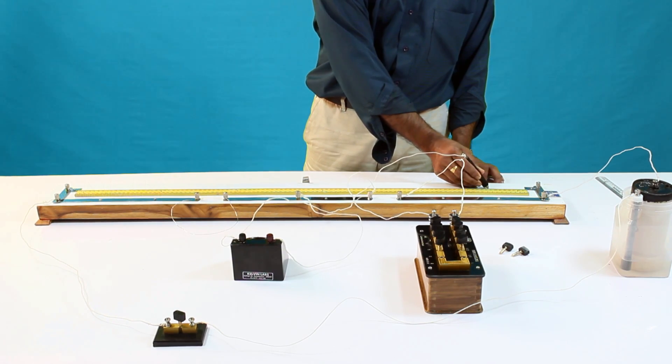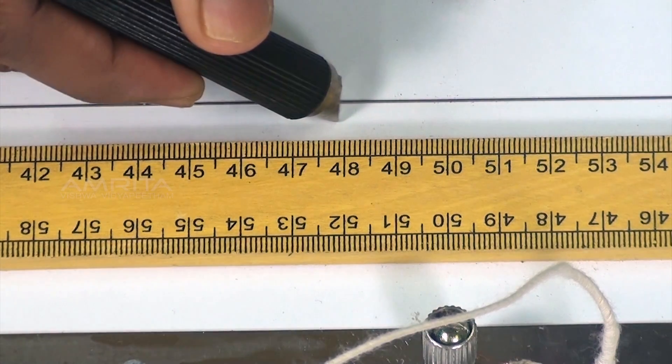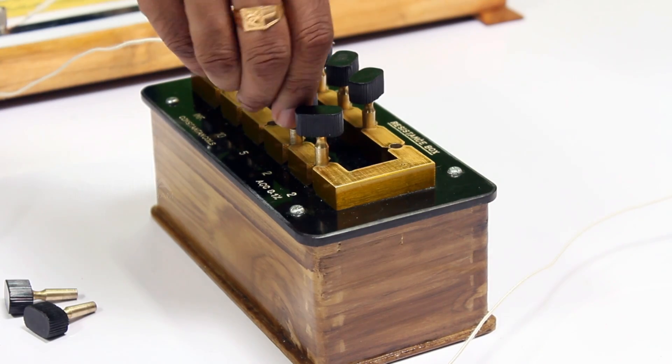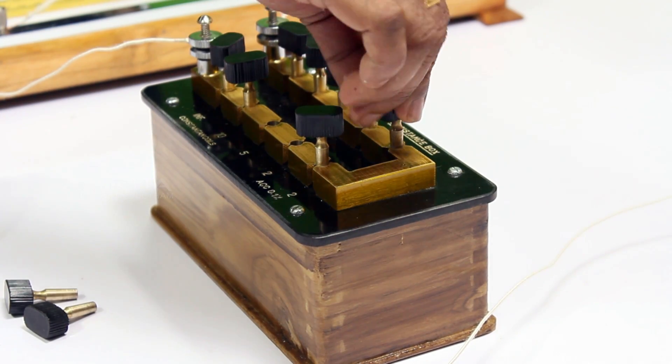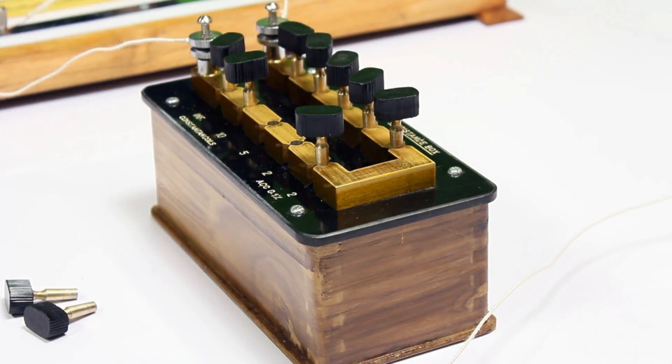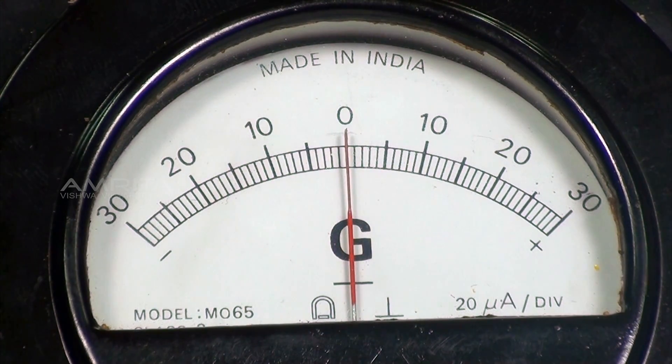Now press the jockey almost at the middle of the wire on the meter and introduce a suitable resistance R in the resistance box so the galvanometer shows zero deflection.